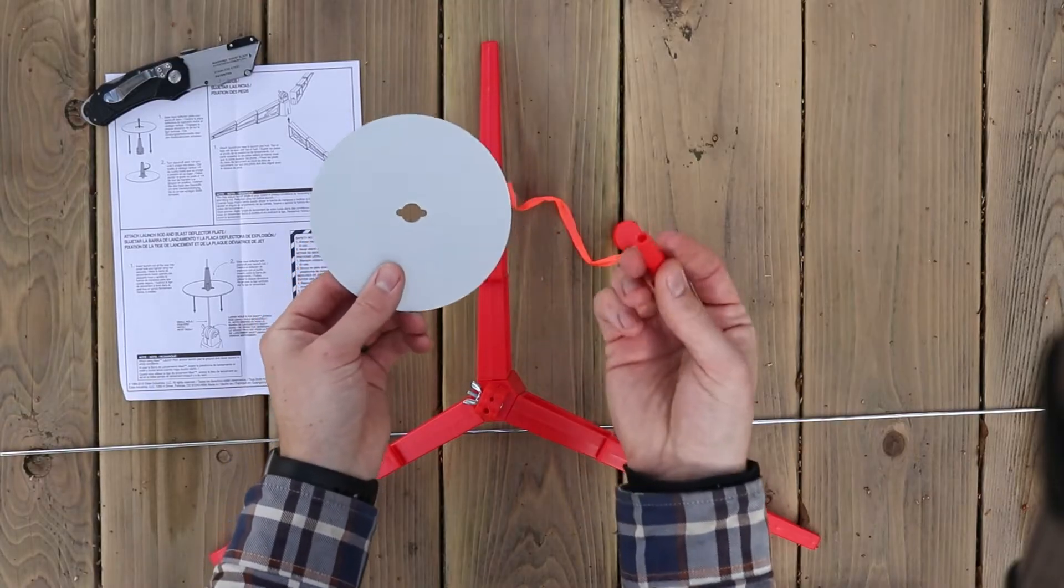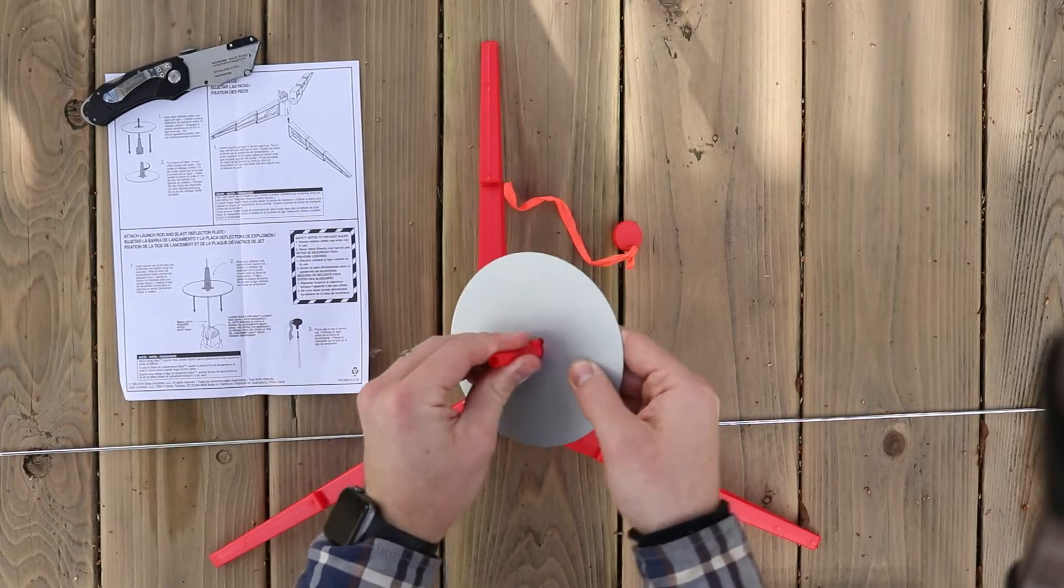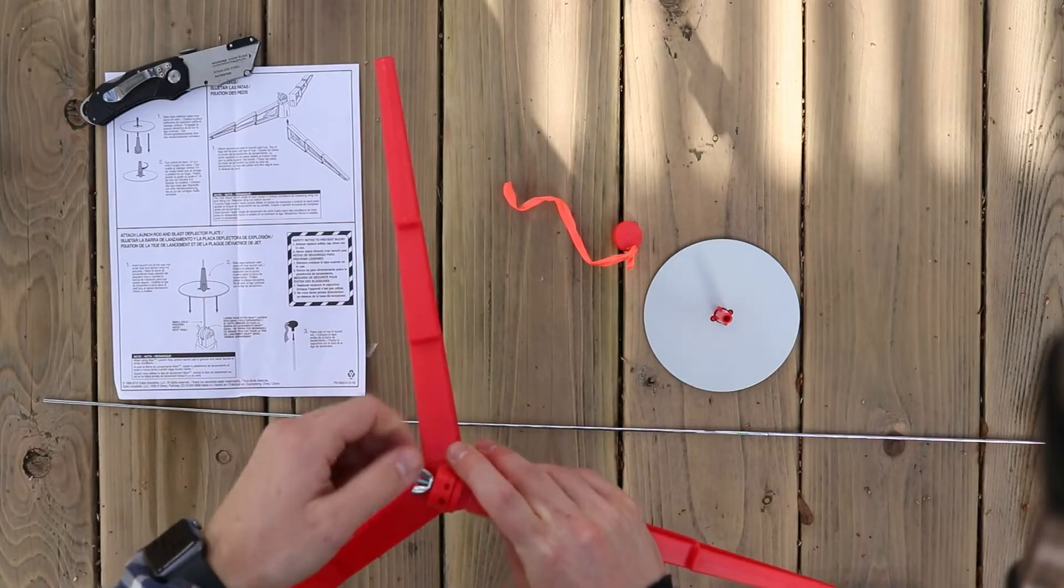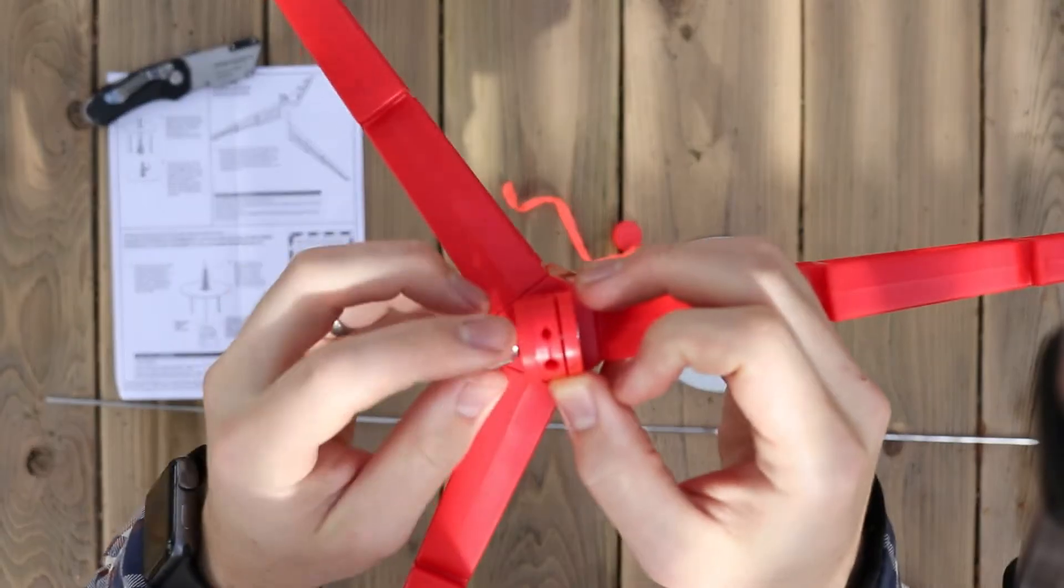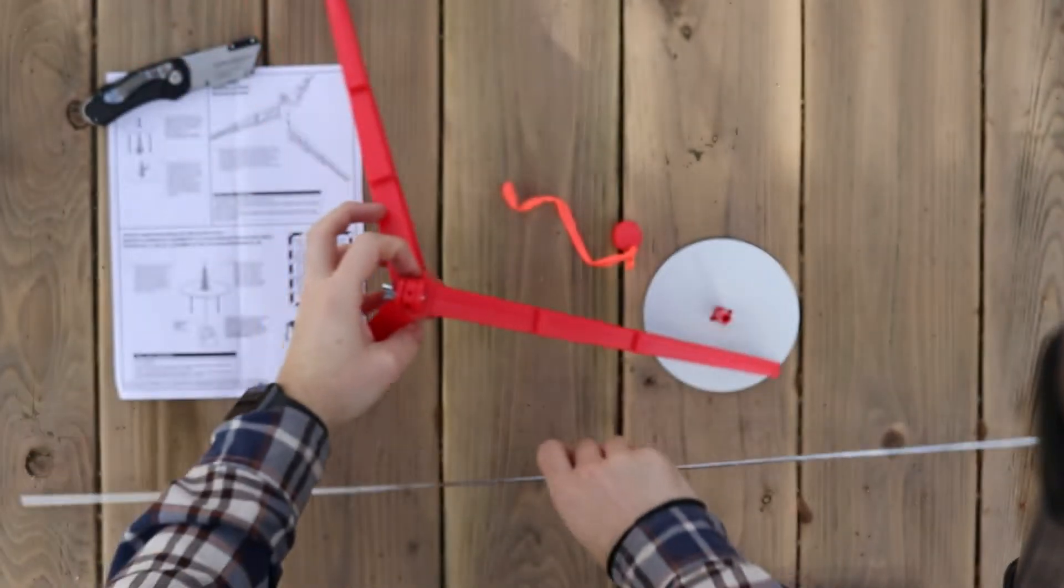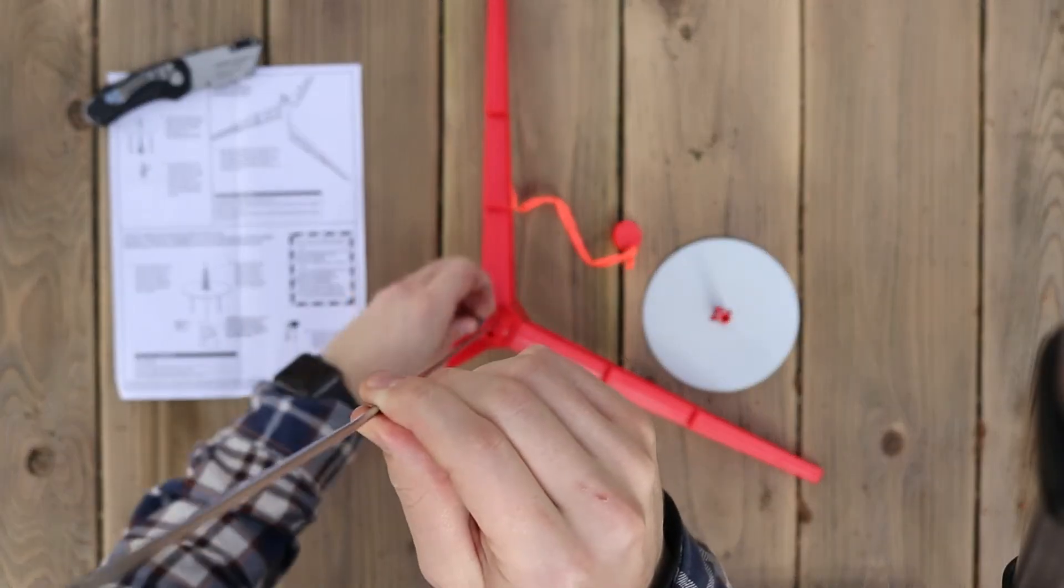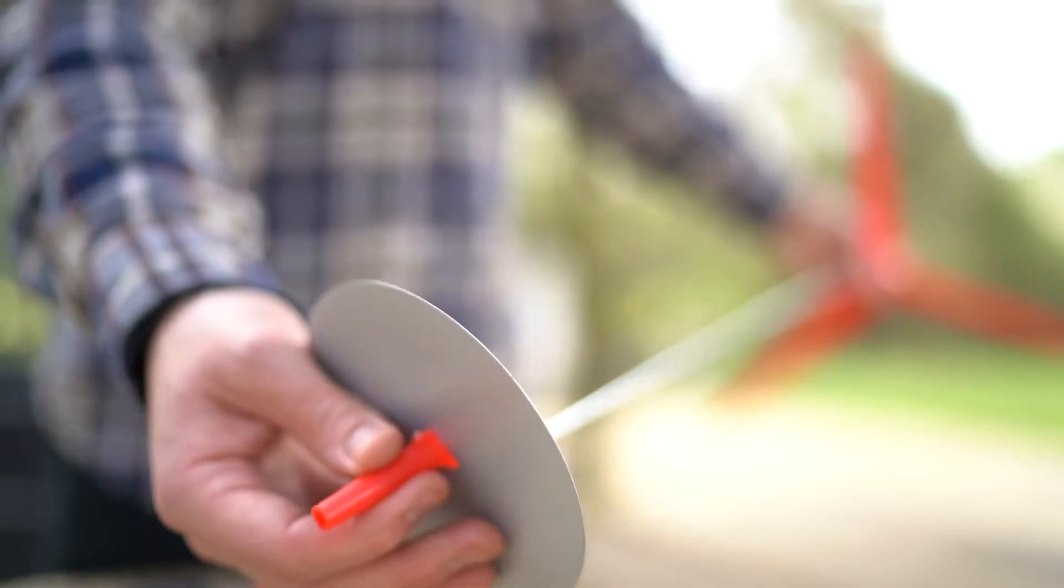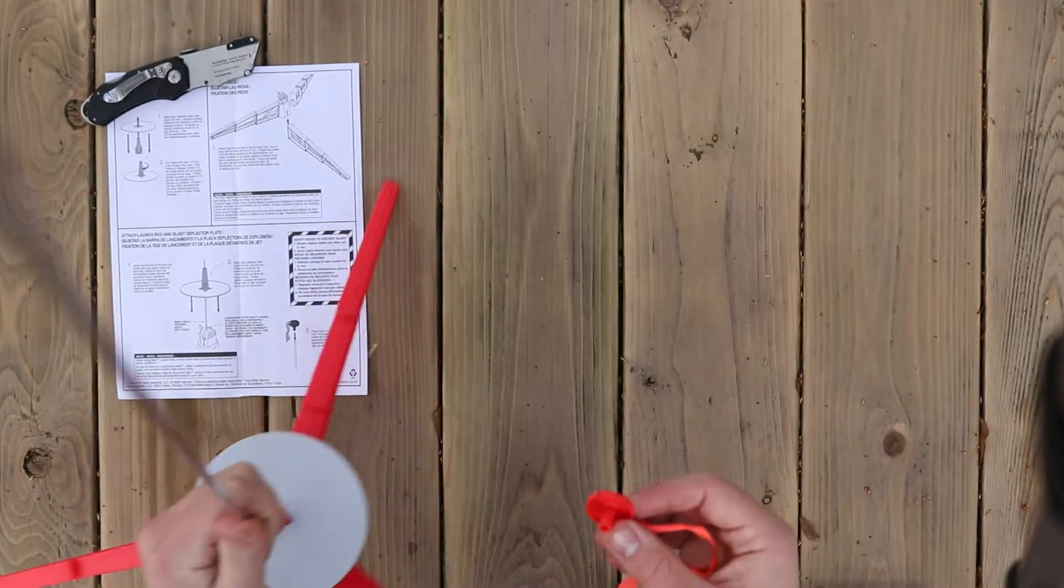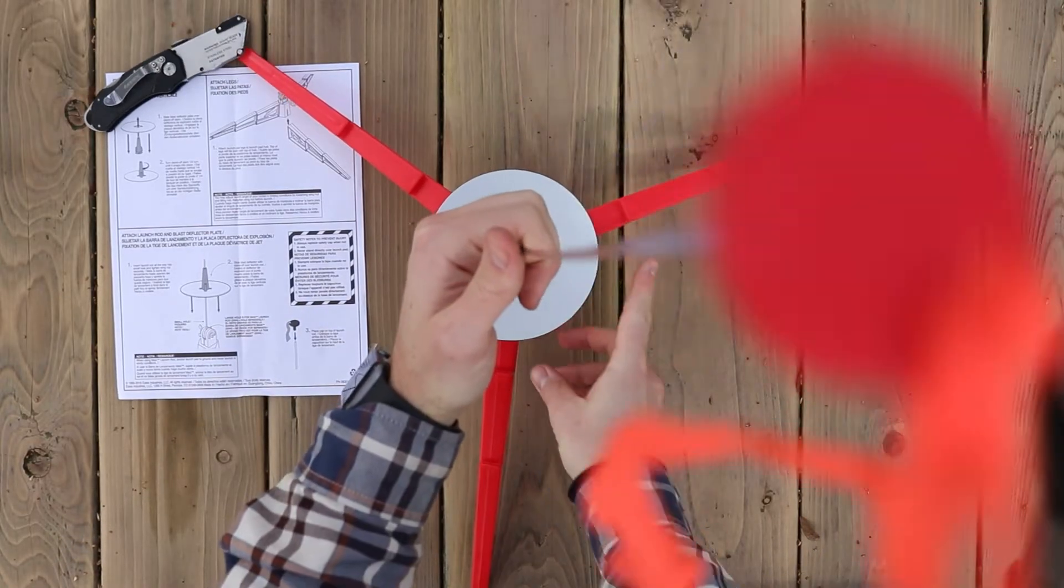Next, grab your blast plate and standoff stem. Simply slide the stem through the middle of the blast plate and rotate 90 degrees until it snaps in place. Now it's time to insert the launch rod into the base of the stand. If you look closely, you'll see there are two holes in the central hub, a small and large one. The stand that comes with this set fits into the smaller hole. Insert it all the way and tighten the wing nut so it's secure. Next, slide the blast deflector onto the launch rod. Last step is to put the cap on the top of the launch rod. And just like that, the stand is done.